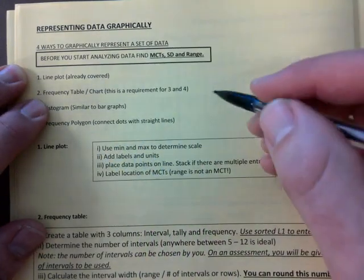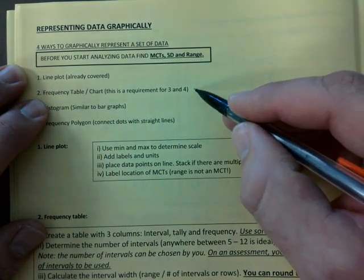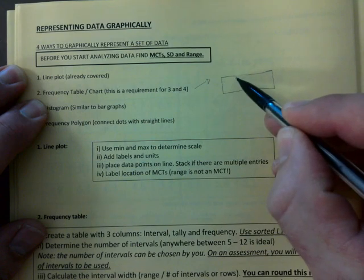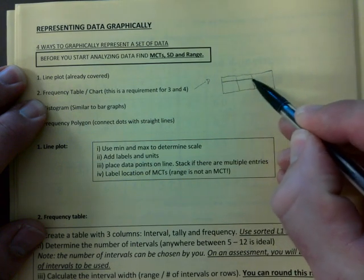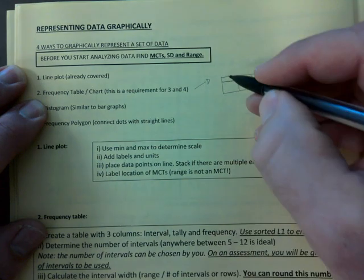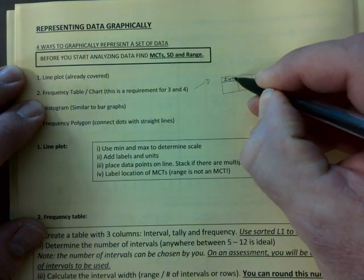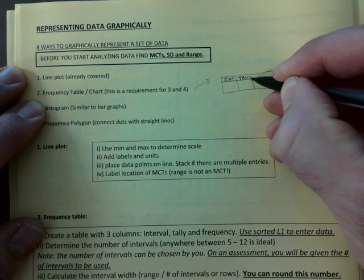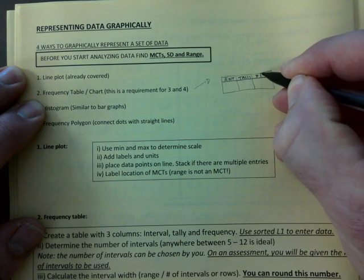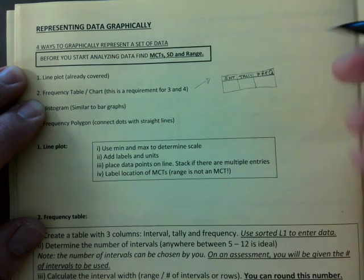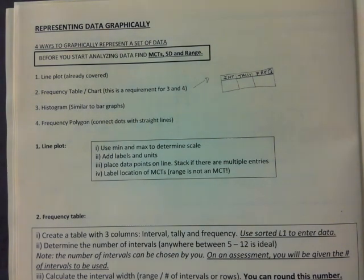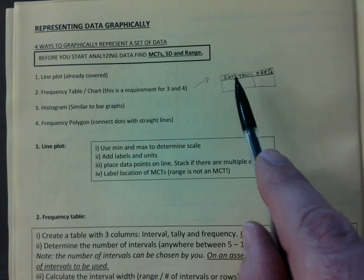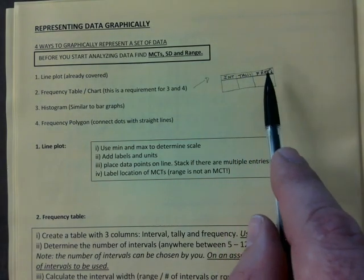So I'll just give you a quick frequency table. You usually will have something like this, you'll have three columns. And you'll have an interval, you'll have the tally, and you'll have frequency. This may, will probably, right now it doesn't make a whole lot of sense, but it's interval, tally and frequency.